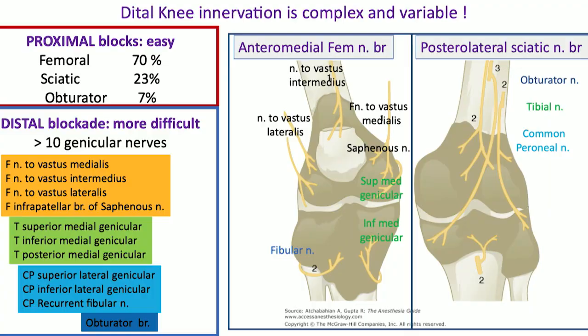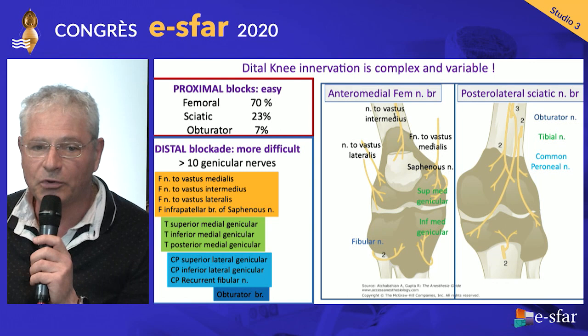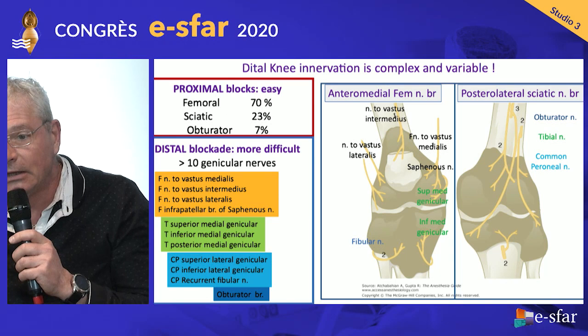The question is whether it is possible to use an adductor canal block plus IPAC block. Following Olivier Rontès' first lecture, when we started performing blocks for major knee surgery, we aimed for 70% analgesia with a femoral block. For posterior pain, we added a sciatic block for 25% more analgesia, and if the patient was not perfectly pain-free, we simply added an obturator block. It was easy.